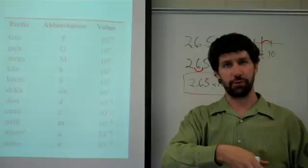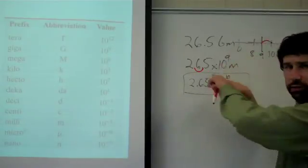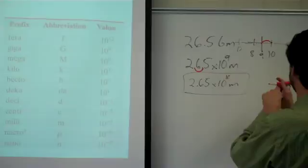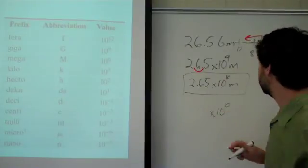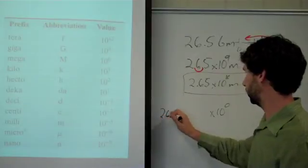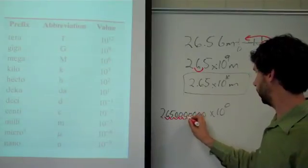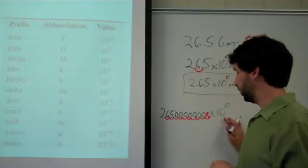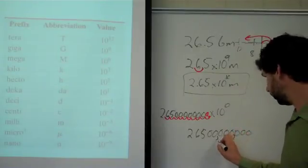Finally, we convert 2.65 times 10 to the 10th into standard decimal notation using the same trick. We're at exponent 10 and want to reach 0, so we move to the left on the number line — meaning we move our decimal to the right. Writing out 2.65 followed by zeros, we move 1, 2, 3, 4, 5, 6, 7, 8, 9, 10 places to the right. There's our decimal place. Since 10 to the 0 equals 1, we have 26,500,000,000 meters.